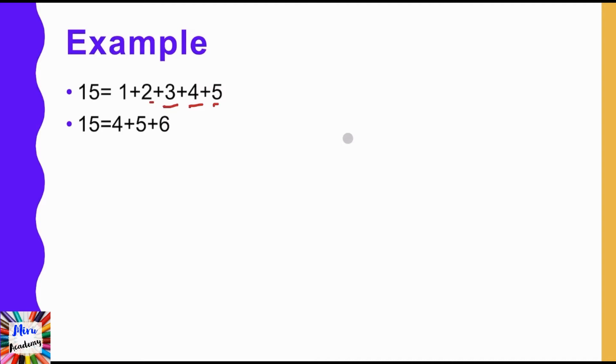And also it can be written with two consecutive digits, that is 7 and 8. These are the possible ways of writing 15 as the sum of consecutive numbers. So these are the three possible ways. So the politeness for 15 is 3. This is how we calculate the politeness of a number.